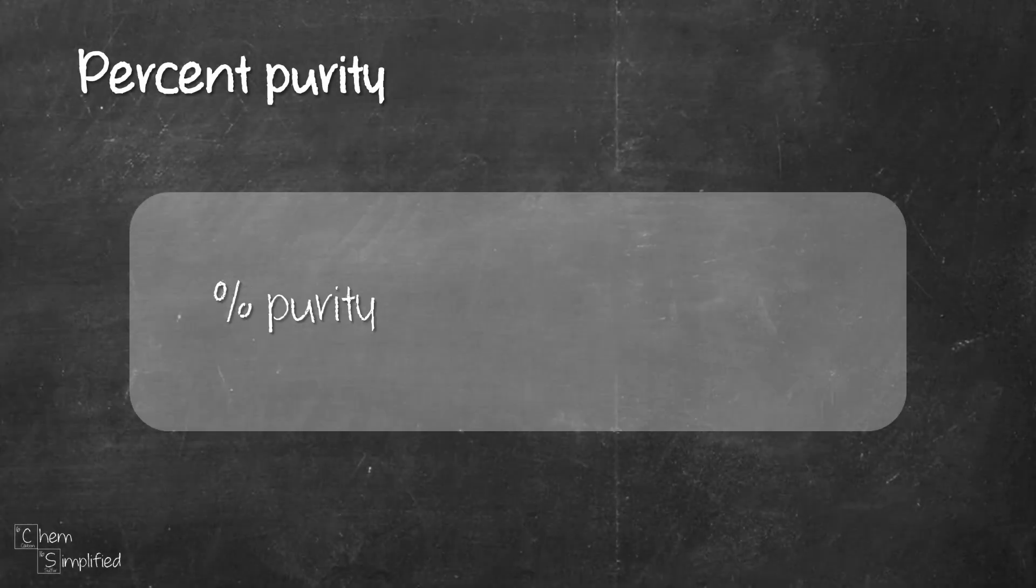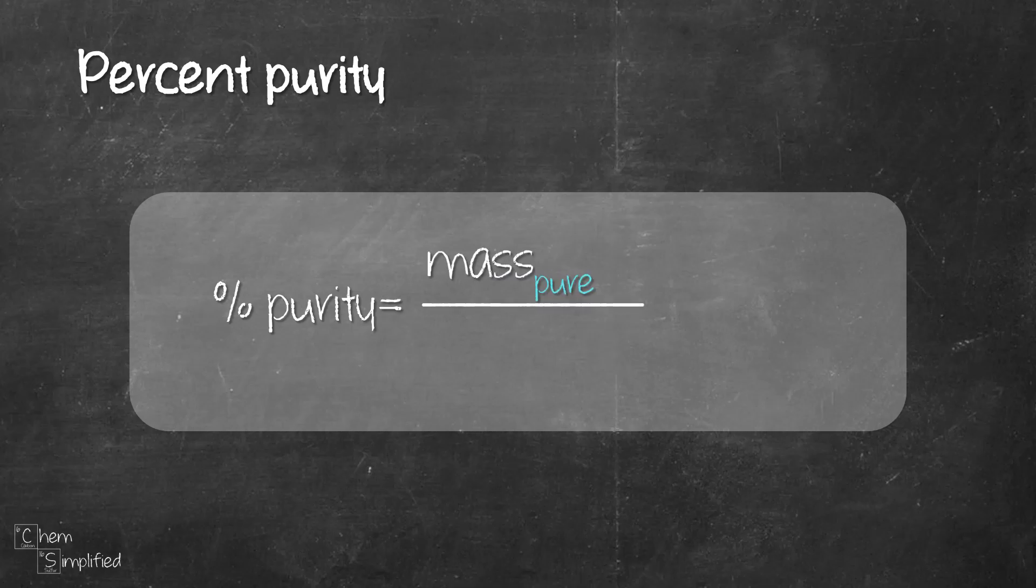Percent purity tells us how pure a sample is. That being said, we can calculate it by taking the mass of a pure sample divided by the mass of an impure sample times 100. Sometimes the mass of impure sample is just called the total mass of the compound.